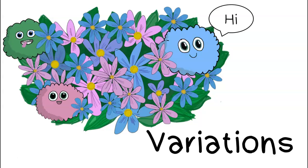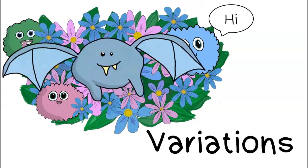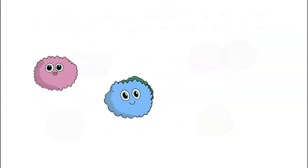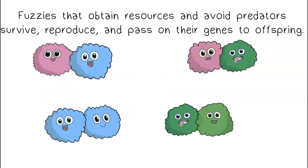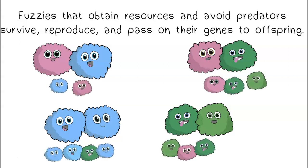Fuzzies live in environments with flowers. These flowers can be blue or pink. To survive, fuzzies must avoid hungry predators that also live in the environment. Fuzzies that obtain resources and avoid predators survive, reproduce, and pass on their genes to offspring.